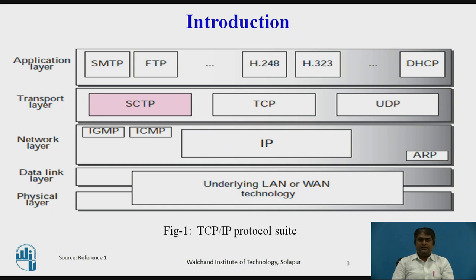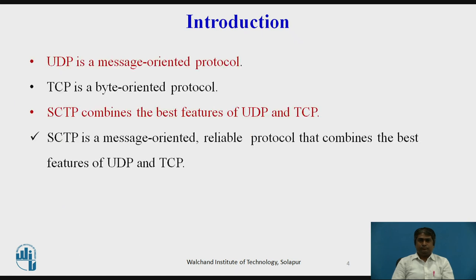We concisely compare UDP, TCP, and SCTP. UDP is a message-oriented protocol. A process delivers a message to UDP, which is encapsulated in a user datagram and sent over the network. UDP preserves the message boundaries; each message is independent from any other message. This is a desirable feature when dealing with applications such as IP telephony and transmission of real-time data. However, UDP is unreliable — the sender cannot know the destiny of a message sent. A message can be lost, duplicated, or received out of order.